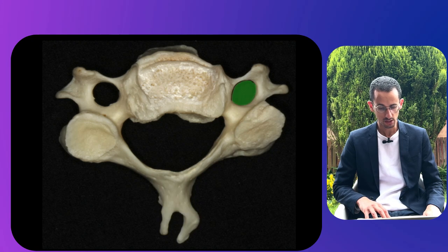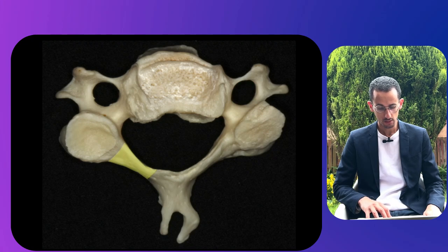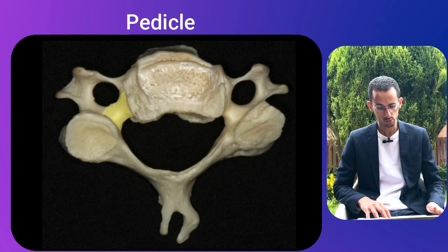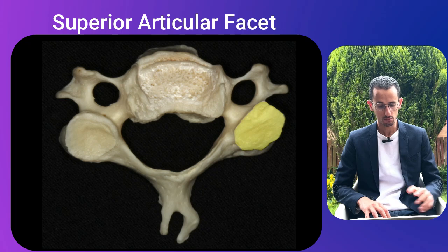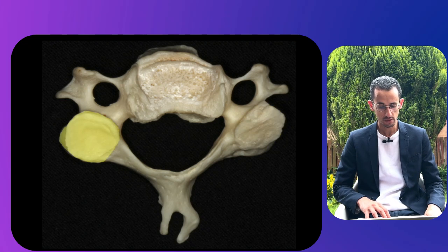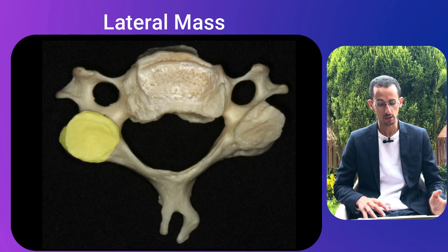Here the spinous process is highlighted in yellow; we can see the transverse foramen where the vertebral artery passes on each side, and the lamina. Here is the pedicle — this is where pedicle screws should be placed in the cervical spine. We can also see the vertebral body, the transverse process, the superior articular facets connecting with the level above, and the lateral mass — the area where lateral mass screws are placed.